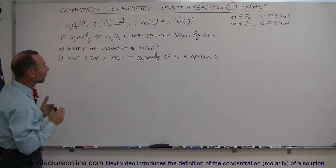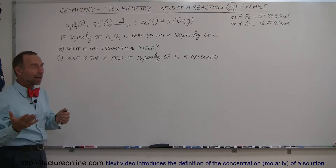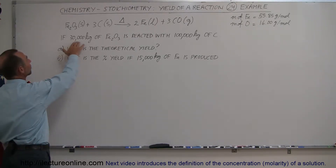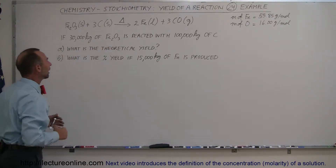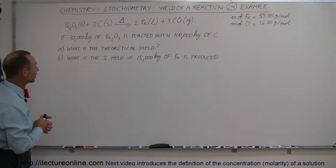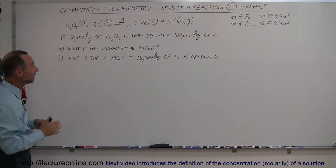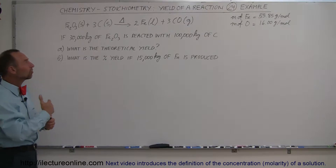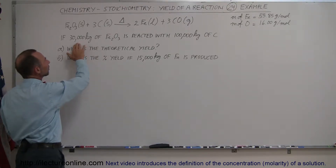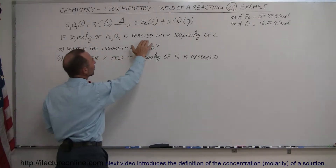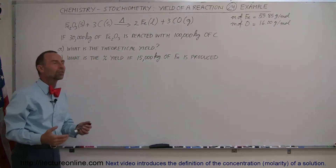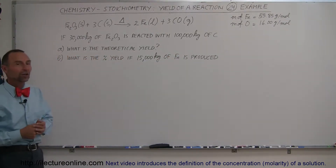As an example, let's say we start out with 30,000 kilograms of this iron oxide ore. That's 30 tons — that's a lot — and so we want to make sure we get as much of the iron out of there as possible. We're going to react it with a whole bunch of carbon: 100,000 kilograms, or 100 tons.